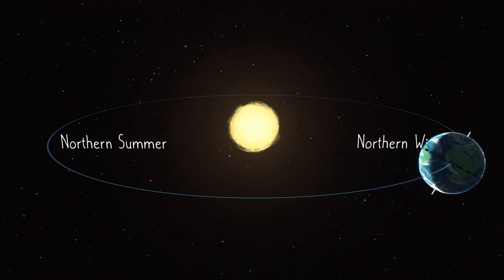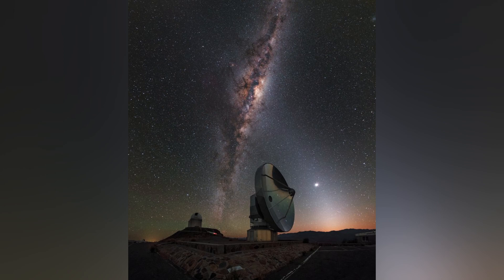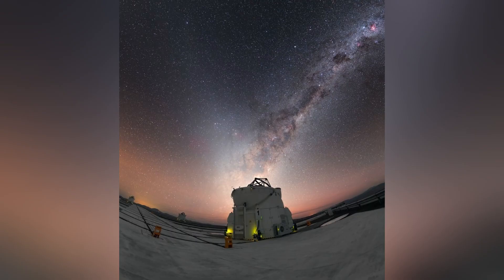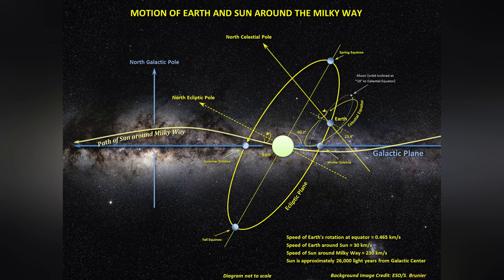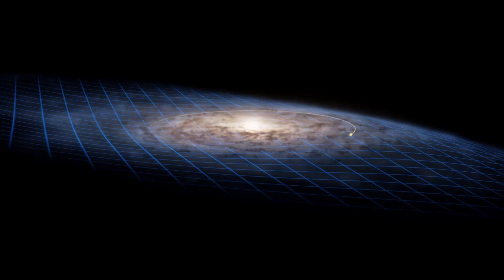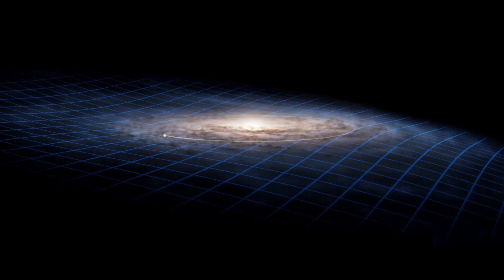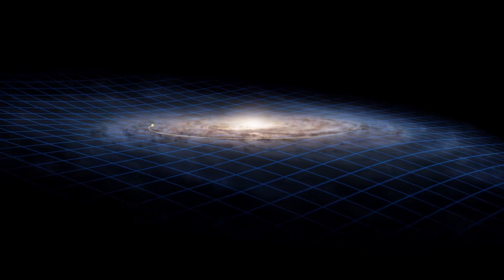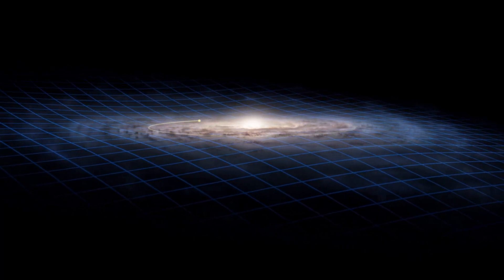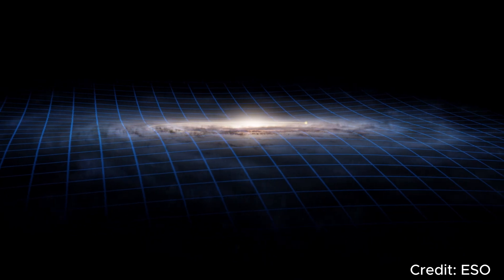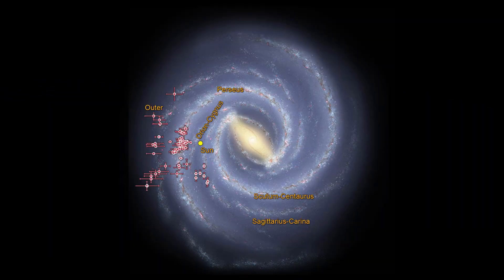Now, let's shift our focus to the galactic plane of the Milky Way galaxy. Unlike the ecliptic plane, which is centered around our Sun, the galactic plane is the flat disk-like structure that defines the shape of our galaxy. Our solar system resides within this vast disk, with the Sun and planets orbiting around the galactic center.